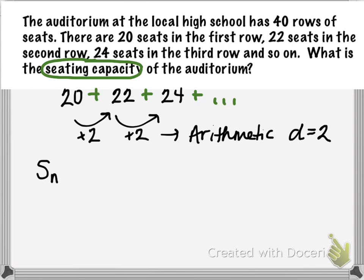Luckily, we have a nice formula for the partial sum of an arithmetic sequence. That will be the number of terms n times a sub 1 plus a sub n all divided by 2.